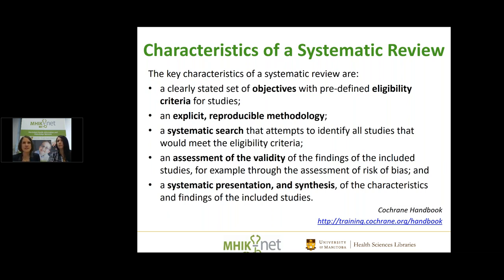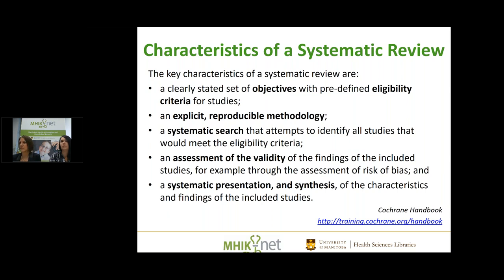Next is an assessment of the validity of results. Sometimes we take a published peer-reviewed article and assume we can rely on it. But in a systematic review, someone on the team goes through the methodology and asks: did they apply the proper methodology, make the right conclusions, can we trust their sample size? They're really assessing the validity of those findings. Finally, results are presented in a way that we can understand what people did and why they did it.